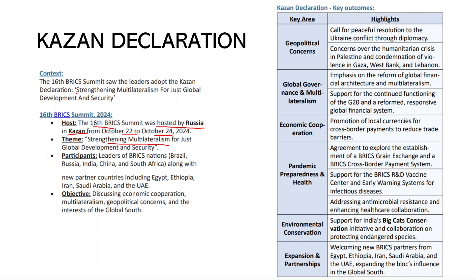This 16th BRICS Summit was important because the new partner countries also joined. The new partners were Egypt, Ethiopia, Iran, Saudi Arabia, and UAE. The important objectives were to discuss economic cooperation among BRICS countries, multilateralism, geopolitical concerns, and to protect the interests of the Global South.